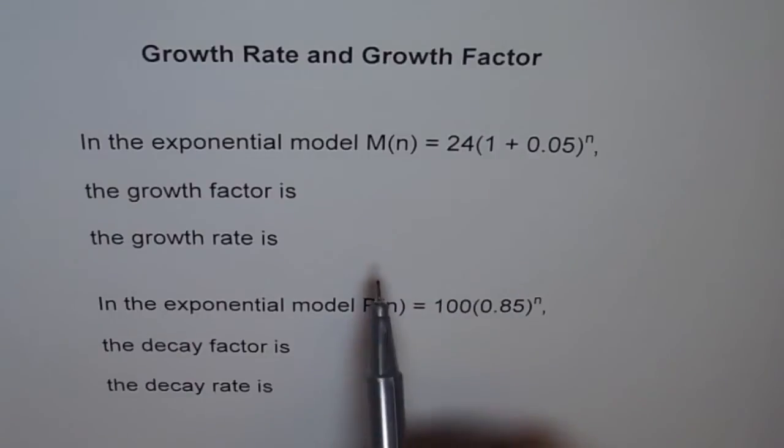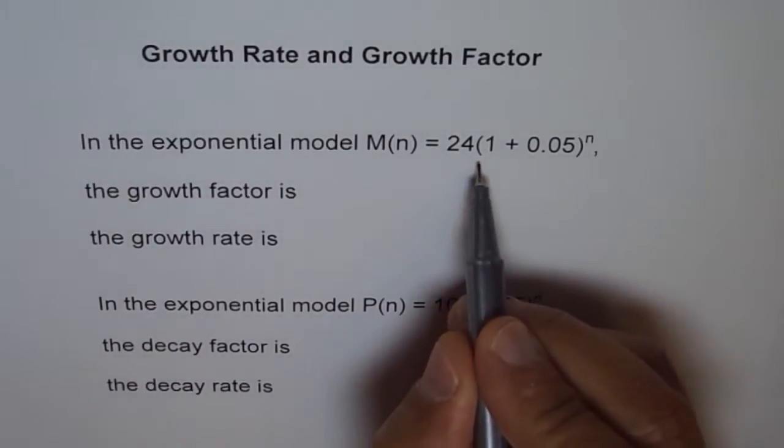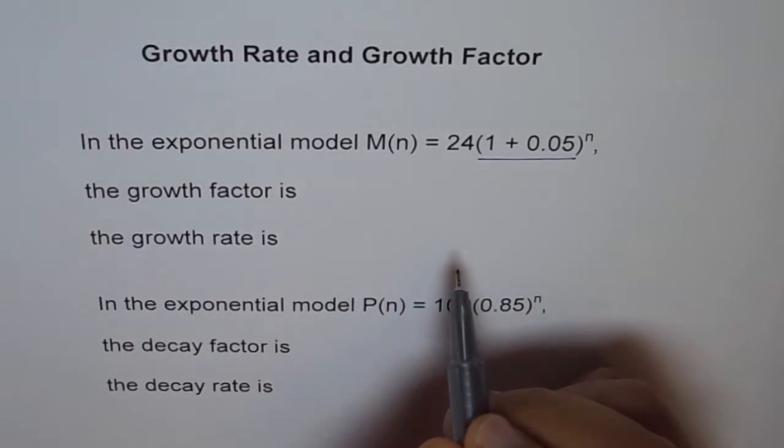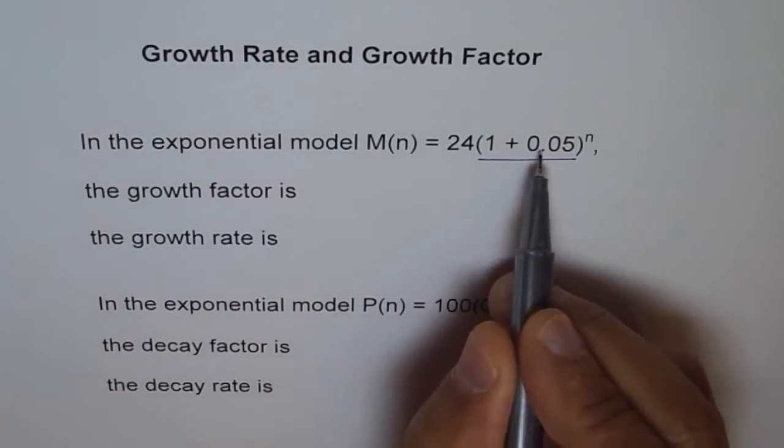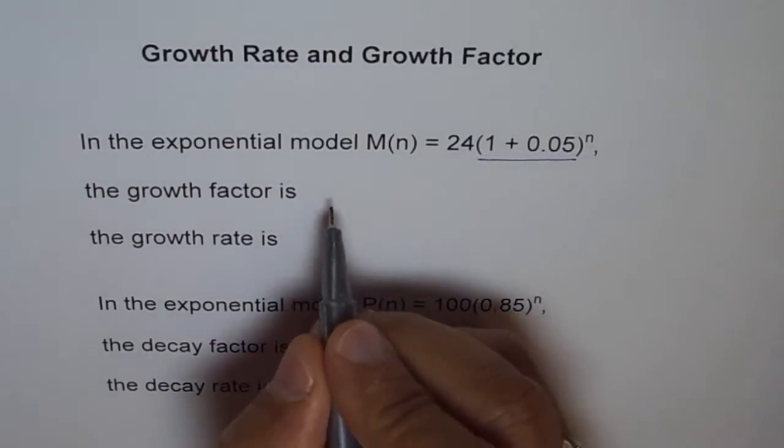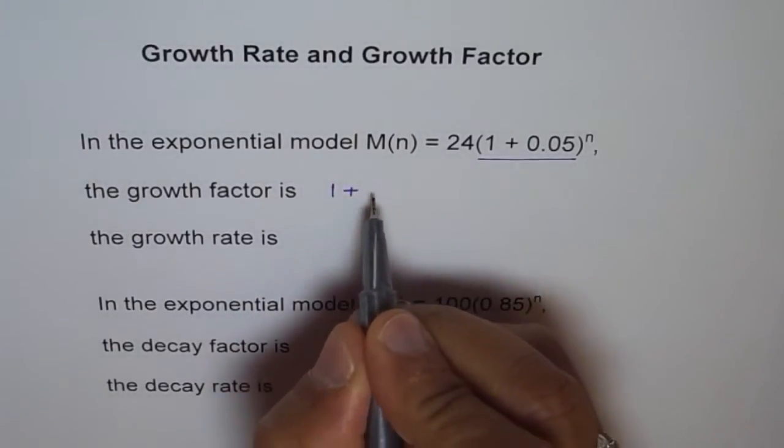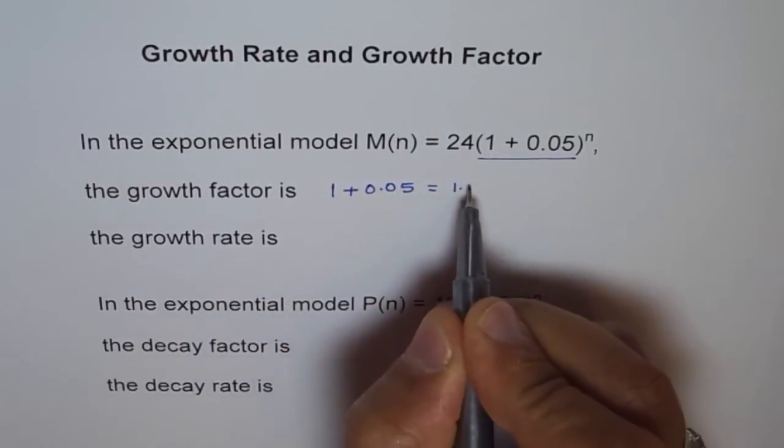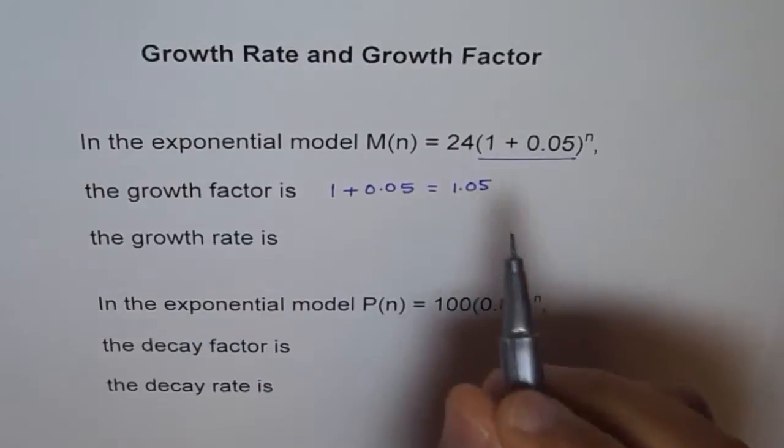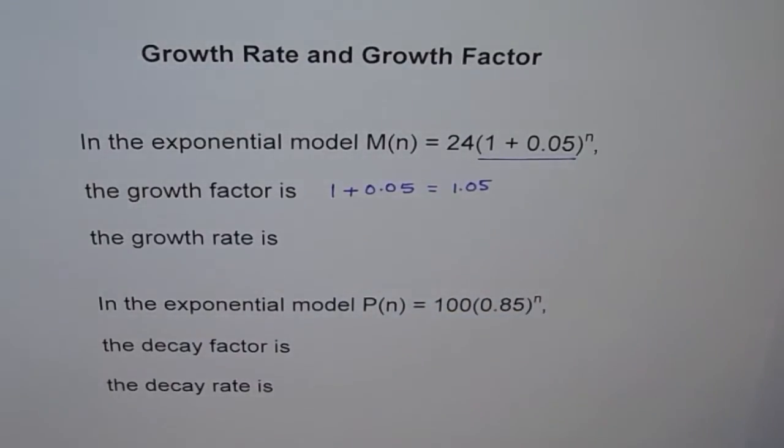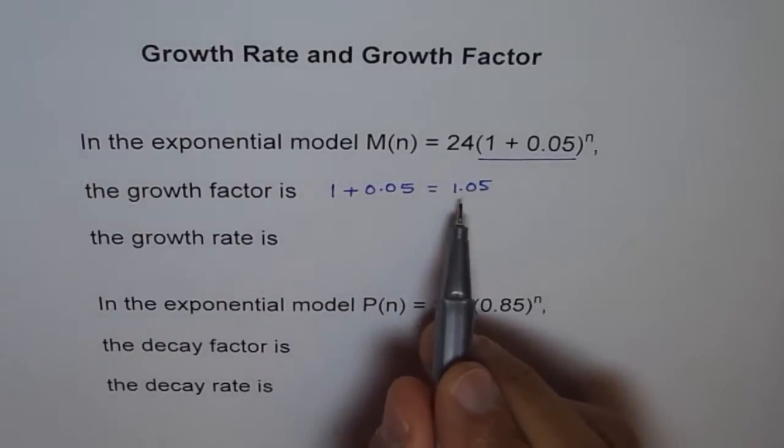So the growth factor is the whole term, this, which is getting multiplied with 24, right? The whole thing, 1 + 0.05. So the growth factor here is 1 + 0.05, which is 1.05. So it is by this factor to the power of n it gets multiplied by. So the growth factor is this.